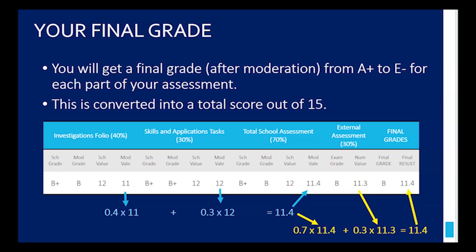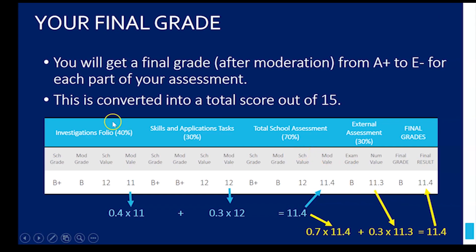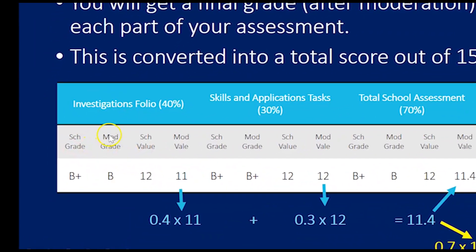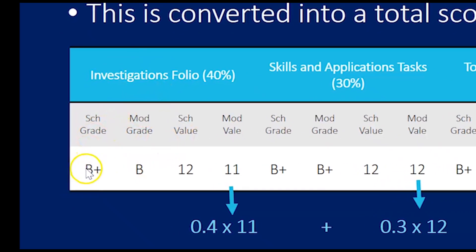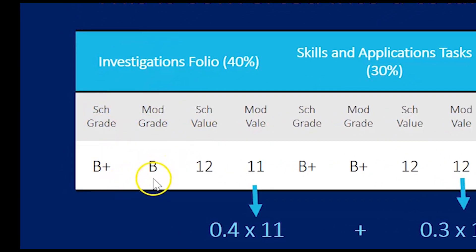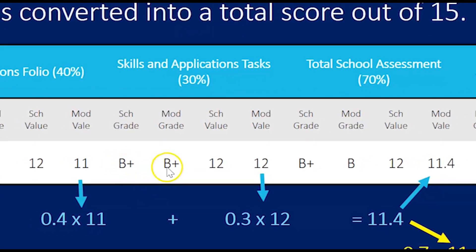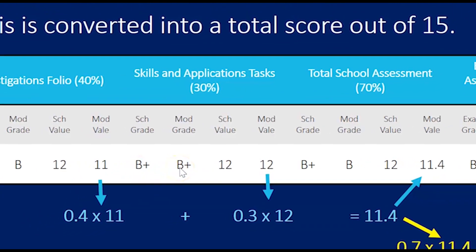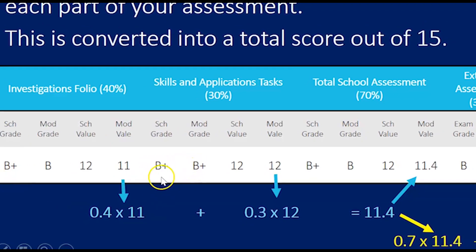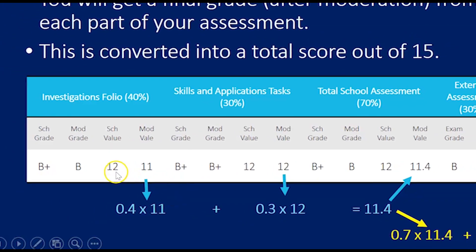So what happens is you get something that looks a little bit like this. You might have done some investigations which are worth 40%, you got a B grade, B+ grade, but after moderation it's gone to a B. You might have done some skills and applications tasks at a B+ and that stayed at moderation as a B+.